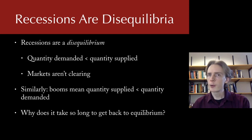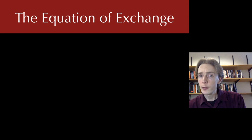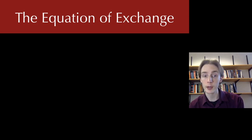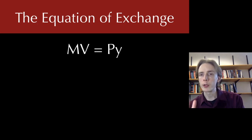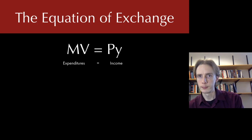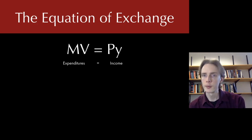In order to answer these questions, I'm going to introduce an equation — the second most important equation in this class. This is going to be our E equals MC squared for macroeconomics: MV equals Py, the equation of exchange. What this tells us is that expenditures equal income. Every time you spend money, that money is going to be somebody else's income. Every time somebody gets income, that's money that got spent by somebody else.